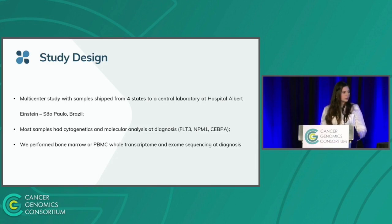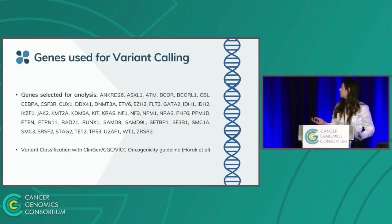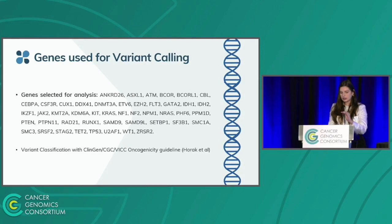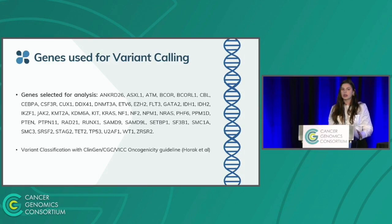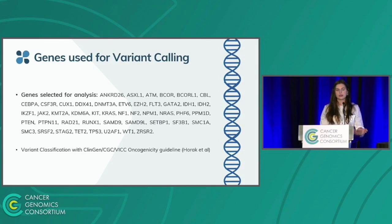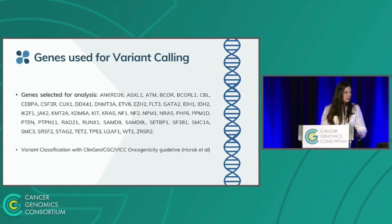We performed bone marrow or PBMC whole transcriptome and exome in all samples at diagnosis. The genes used for variant calling include 146 genes that are very relevant for pathogenesis and prognosis of AML. For the classification of these variants, we used ClinGen, CGC, and oncogenesis guidelines.